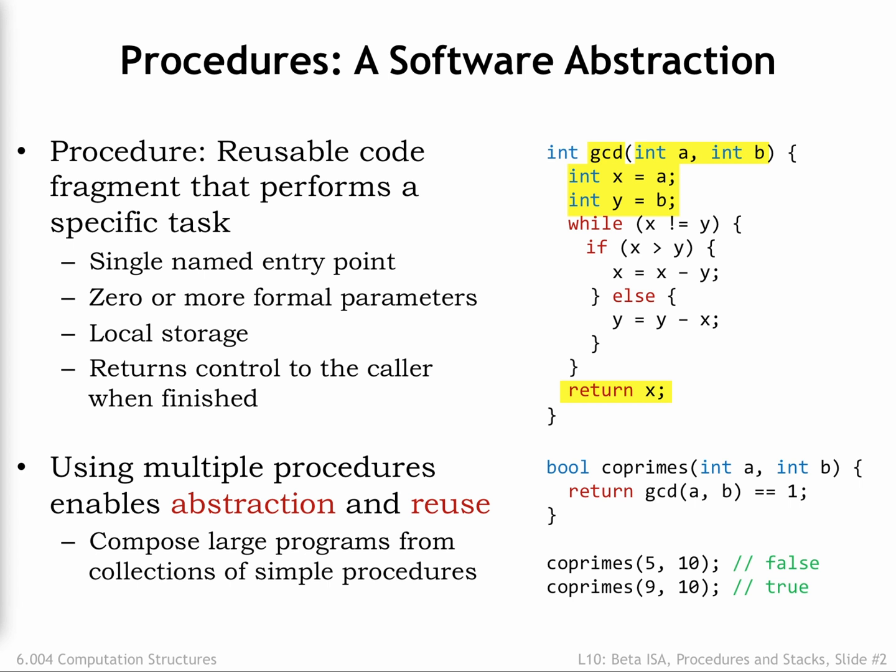Every high-level language comes with a collection of pre-built procedures, called libraries, which can be used to perform arithmetic functions, e.g. square root or cosine, manipulate collections of data, e.g. lists or dictionaries, read data from files, and so on. The list is nearly endless. Much of the expressive power and ease of use provided by high-level languages comes from their libraries of black boxes.